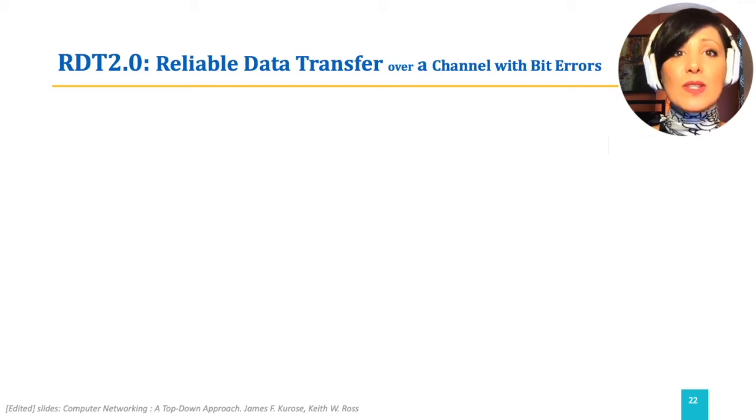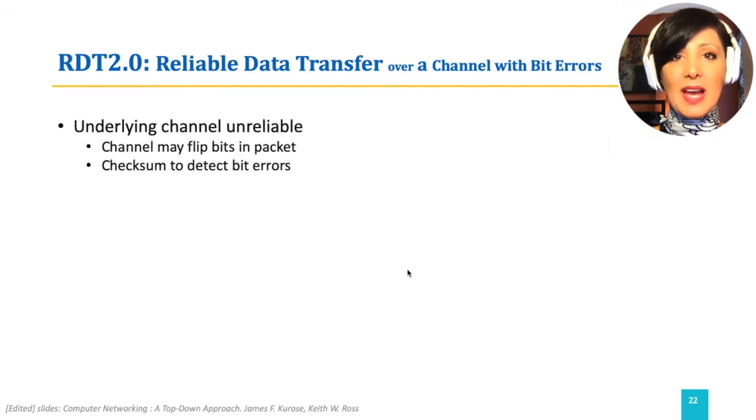Now, a step towards more real channel conditions. In designing RDT 2.0, we are going to assume that the underlying channel is unreliable.